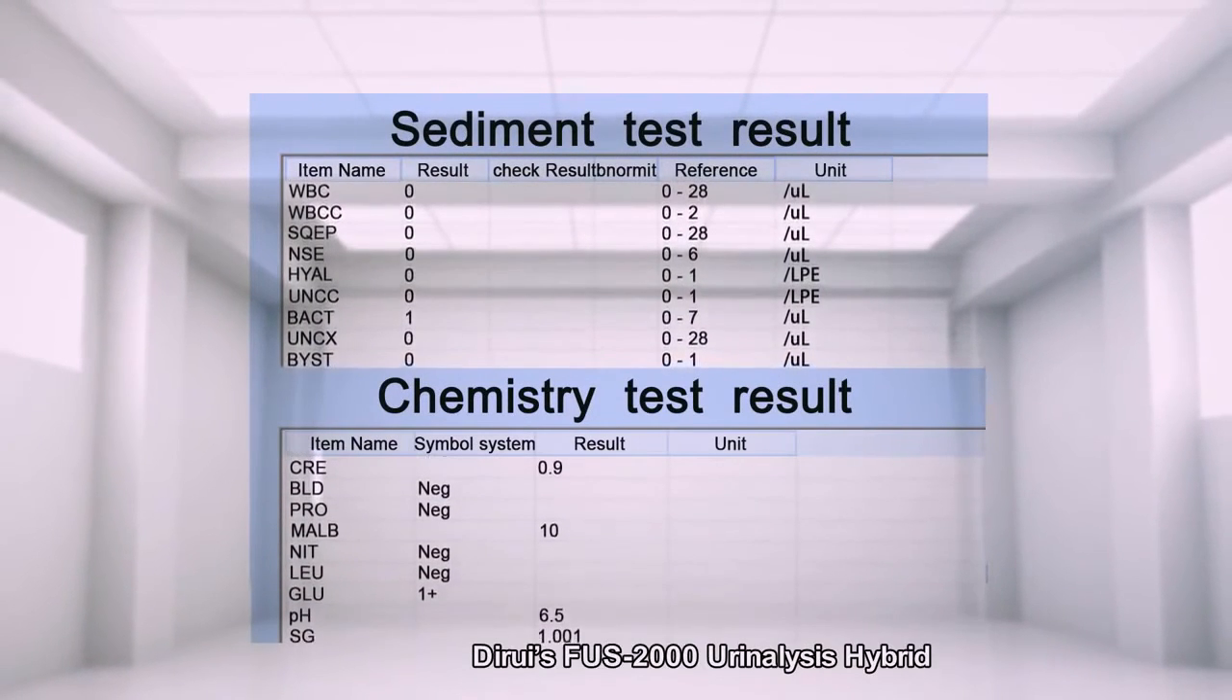Standardized test system. D-Ray's FUS-2000 urinalysis hybrid meets the requirements of ISO 15189 with integrated and standardized test reports, as well as control and calibration records. Test items include 12 categories of urine sediment elements, plus 14 urine dry chemistry parameters, and 3 physical analysis items.